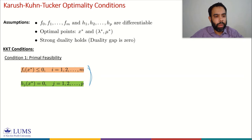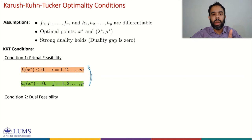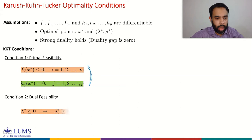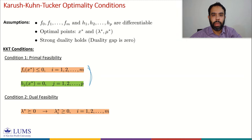The second condition is dual feasibility. For the Lagrange dual problem, the optimal point lambda star and mu star must satisfy the constraints of the Lagrange dual problem. For the Lagrange dual problem, we only have one constraint: lambda should be greater than or equal to zero. It simply means we require lambda_i star ≥ 0 for i = 1, 2, ..., M. Conditions 1 and 2 simply originate from the requirement of the primal problem and dual problem to be feasible, respectively.